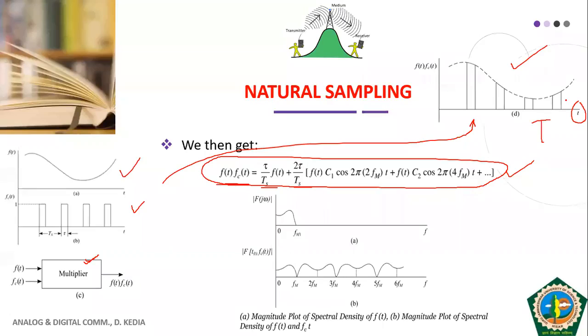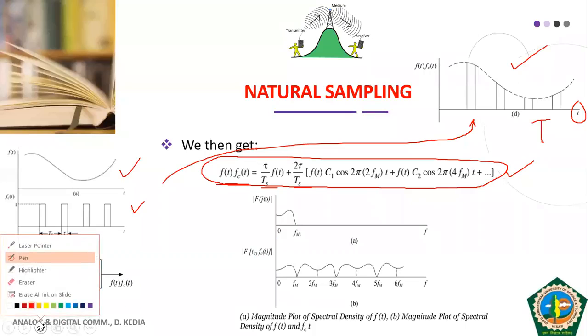This is the time domain representation of the PAM signal obtained by multiplying the modulating signal and the train of pulses.